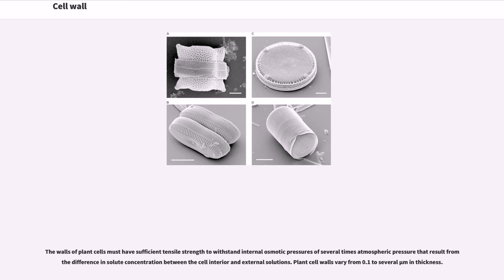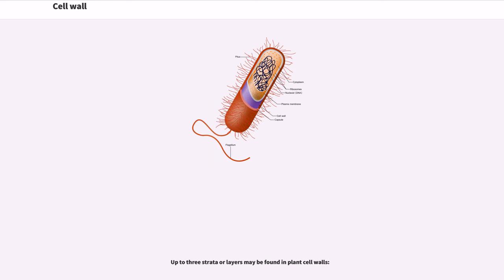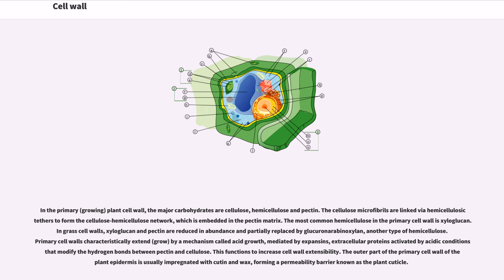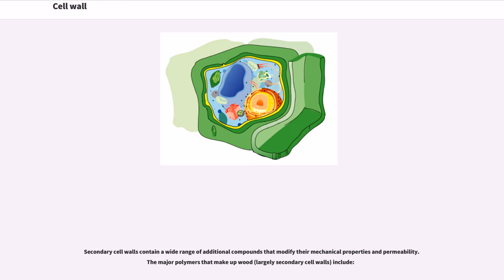Plant cell walls vary from 0.1 to several micrometers in thickness. Up to three strata or layers may be found in plant cell walls. In the primary, growing, plant cell wall, the major carbohydrates are cellulose, hemicellulose and pectin. The cellulose microfibrils are linked via hemicellulosic tethers to form the cellulose-hemicellulose network, which is embedded in the pectin matrix. The most common hemicellulose in the primary cell wall is xyloglucan. In grass cell walls, xyloglucan and pectin are reduced in abundance and partially replaced by glucuronoarabinoxylan, another type of hemicellulose. Primary cell walls characteristically extend, grow, by a mechanism called acid growth, mediated by expansins, extracellular proteins activated by acidic conditions that modify the hydrogen bonds between pectin and cellulose. This functions to increase cell wall extensibility. The outer part of the primary cell wall of the plant epidermis is usually impregnated with cutin and wax, forming a permeability barrier known as the plant cuticle.